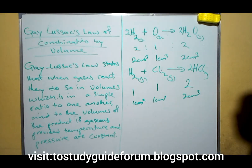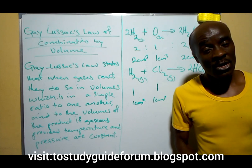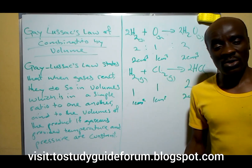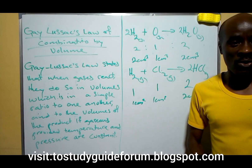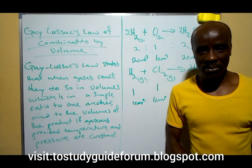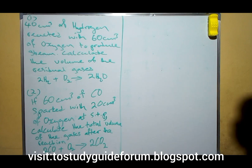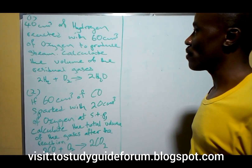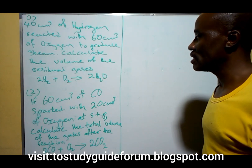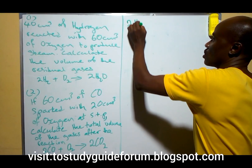Based on that, I want us to look at some calculations that will help us understand this. Pay attention as we go through the calculations. By the end of this video, you will be able to see calculations regarding Gay-Lussac's Law, and I believe it will never be a problem for you again. Question 1: 40 cm³ of hydrogen reacted with 60 cm³ of oxygen to produce steam. Calculate the volume of residual gases.